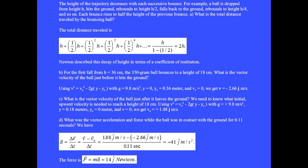The height of the trajectory decreases with each successive bounce. A ball is dropped from height h, hits the ground, rebounds to height h over 2, falls back, rebounds to h over 4, and so on — each bounce rises to half the height of the previous bounce. Question A: what is the total distance traveled by the ball? The total distance is h plus one-half h plus one-half squared h plus one-half cubed h and so on. This sum gives h over (1 minus one-half), making 2h — the total distance traveled is 2h.